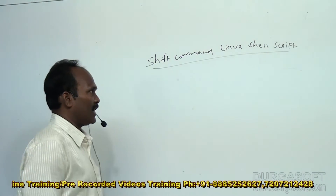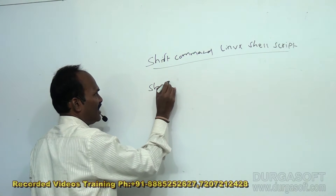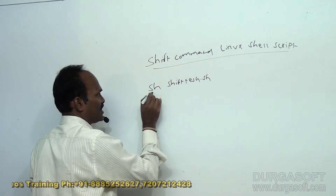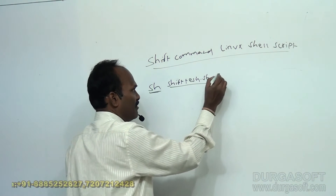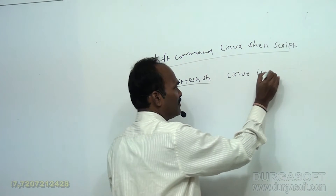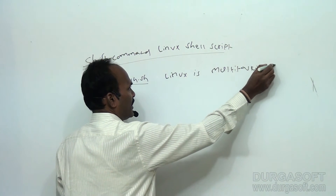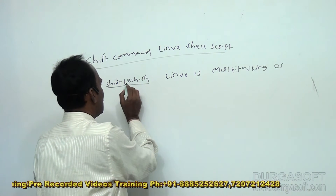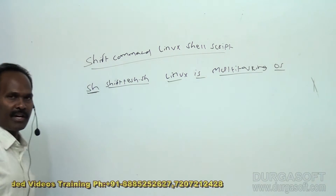Suppose my program name is shift test and the file is shift_test.sh. After the script name, I give command-line arguments like: linux is multi-tasking operating system. Along with the script name, I have given four command-line parameters: one, two, three, four.